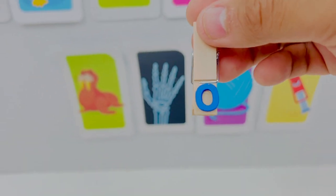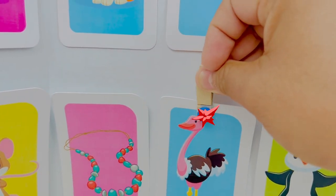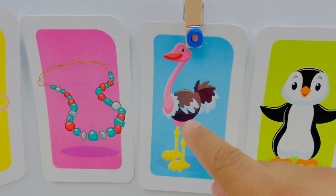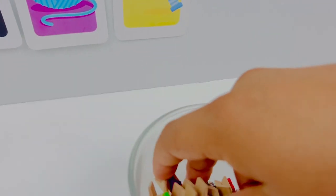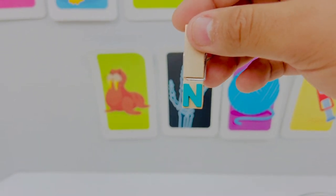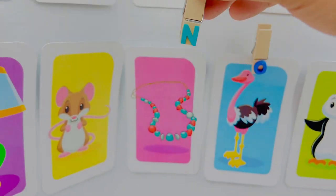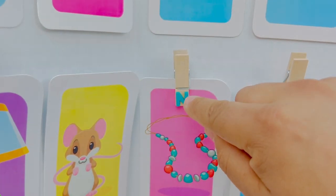This is letter O. O is for ostrich. O ostrich. This is letter N. Letter N is for necklace. N necklace.